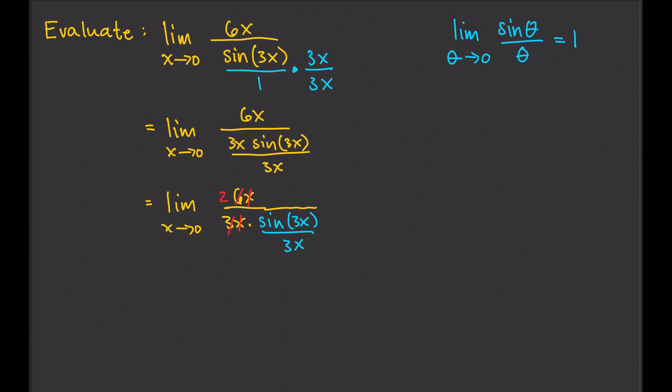So, now, what we have is limit as x approaches 0 of 2 over sine 3x over 3x.